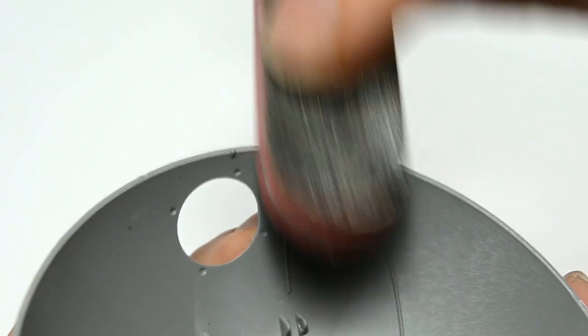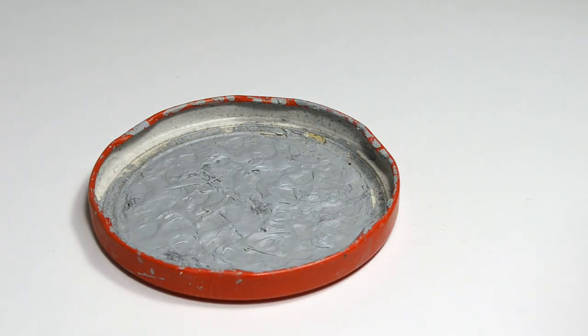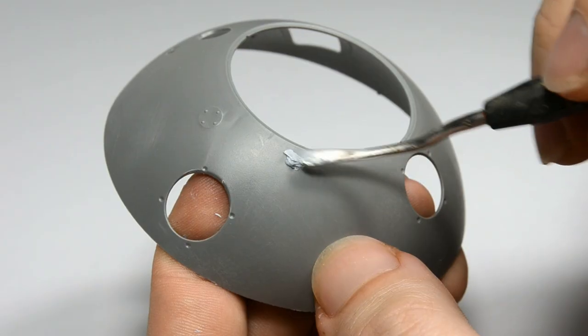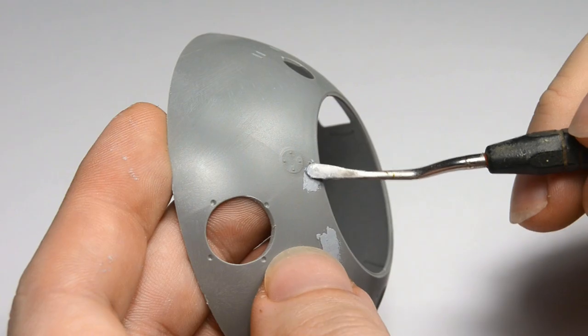I started with some ordinary cleanup of the parts and while doing so I noticed these four sink marks on each side. So let's quickly fill them with some Tamiya putty. Try to be careful around fine details like this fuel cap.